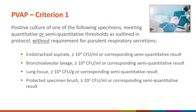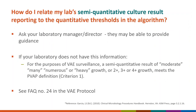PVAP criterion one requires a positive culture from endotracheal aspirate, BAL, lung tissue, or protected specimen brush, which meets the quantitative or semi-quantitative thresholds outlined in the protocol. Sputum is not an acceptable specimen. If your laboratory reports semi-quantitative results, ask your lab what the corresponding value is to the quantitative threshold. For VAE surveillance purposes, a semi-quantitative result of moderate, many, numerous, or heavy growth, or 2+, 3+, or 4+ growth, meets this criterion.